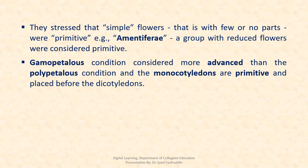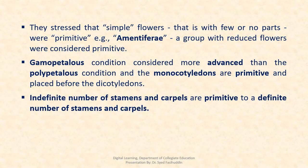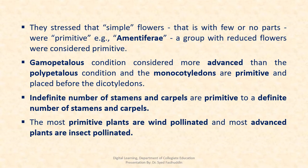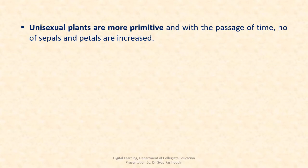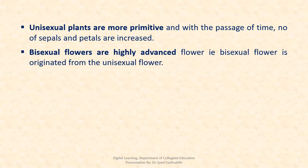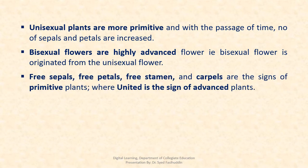The gamopetalous condition is considered as more advanced than the polypetalous condition. Monocotyledons are primitive and placed before Dicotyledons. An indefinite number of stamens and carpels is primitive compared to a definite number. The most primitive plants are wind-pollinated and the most advanced plants are insect-pollinated. Unisexual plants are more primitive, and with the passage of time the number of sepals and petals increased. Free sepals, free petals, free stamens, and carpels are signs of primitive plants.